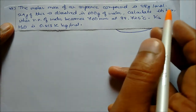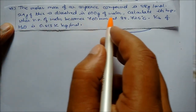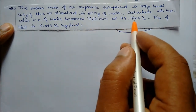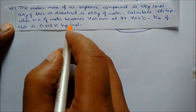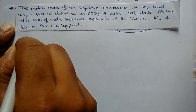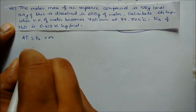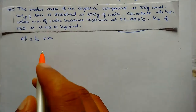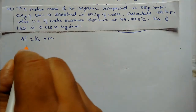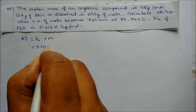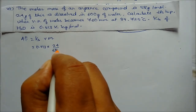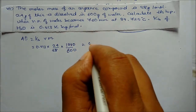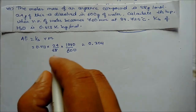Next problem: The molar mass of an organic compound is 58 g/mol. 24 grams is dissolved in 60 grams of water. Calculate its boiling point, given that vapor pressure becomes 760 mmHg at 99.725°C, and Kb of water is given. Using delta T = Kb × m: delta T = 0.513 × (24/58) × (1000/60) = 0.354.